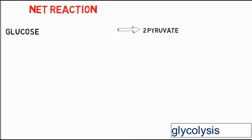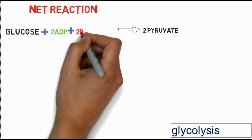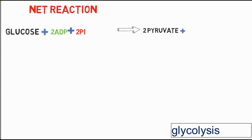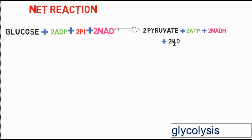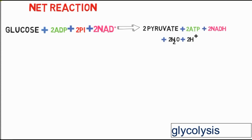In the net reaction of glycolysis, two molecules of pyruvate (3-carbon) are produced. Two ADP and phosphate moieties are joined to form 2 ATP molecules. Two NAD molecules are converted into 2 NADH, two molecules of H2O are released, and two hydrogen molecules are released. This is the net reaction of glycolysis.